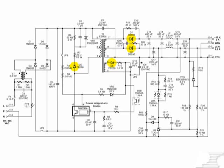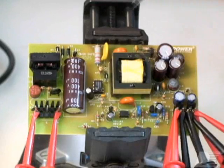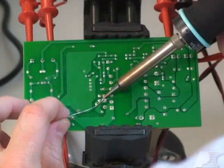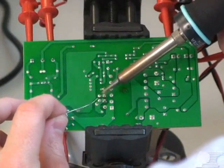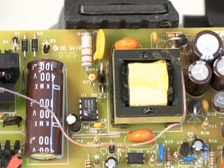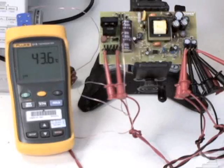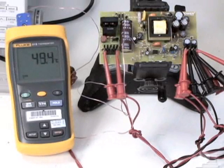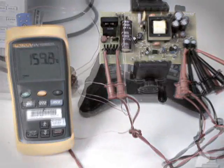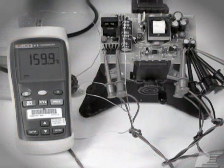If any one of the output, bias, or clamp diodes is beginning to fail, it may cause the power supply to intermittently enter auto-restart when loaded. Replace each of these components one at a time and retest your design. If replacing one of these diodes fixes the problem, then measure its temperature at the lowest AC input voltage while the supply is at full load. If the diode is running too hot, resolve this issue before continuing.